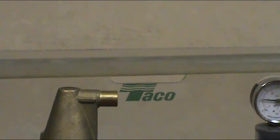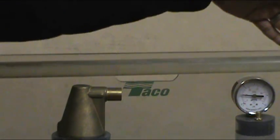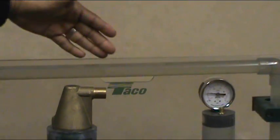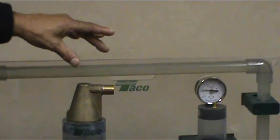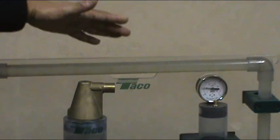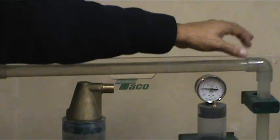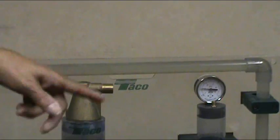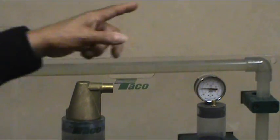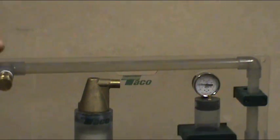Air wants to rise, but because it's moving and the turbulence happens at this point, it takes distance for that air to get to the top of the pipe so it can enter the air scoop on top. By putting the air scoop right next to the elbow, the tendency is for the air to blow right through, continue through the system, come back around again, and never go away.